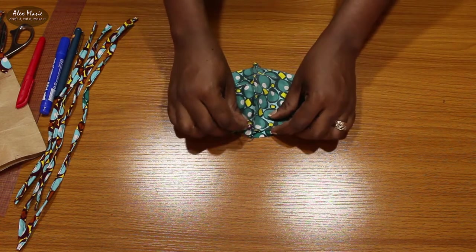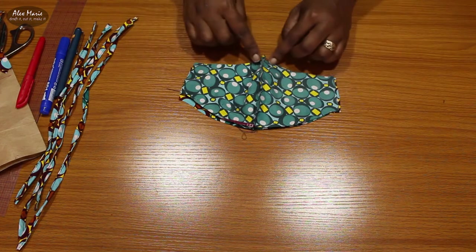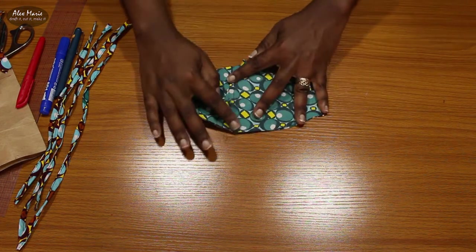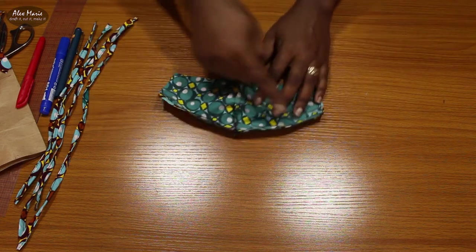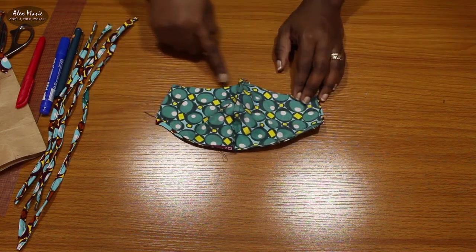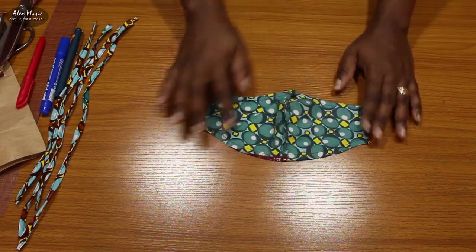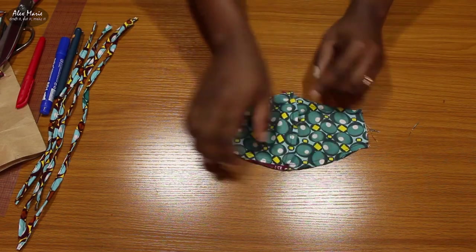Now I'm just going to sew around. You can iron this down to make it flatter, you can iron your seam down. So you're going to sew around here and around there. Make sure your seam allowances face the same direction so that it lies flat.